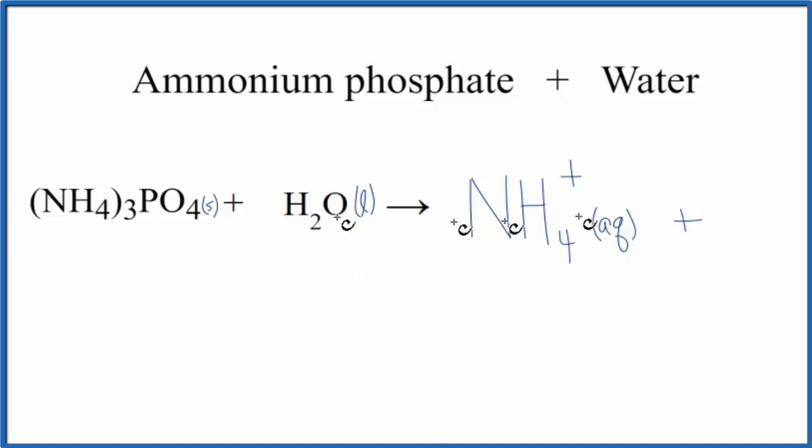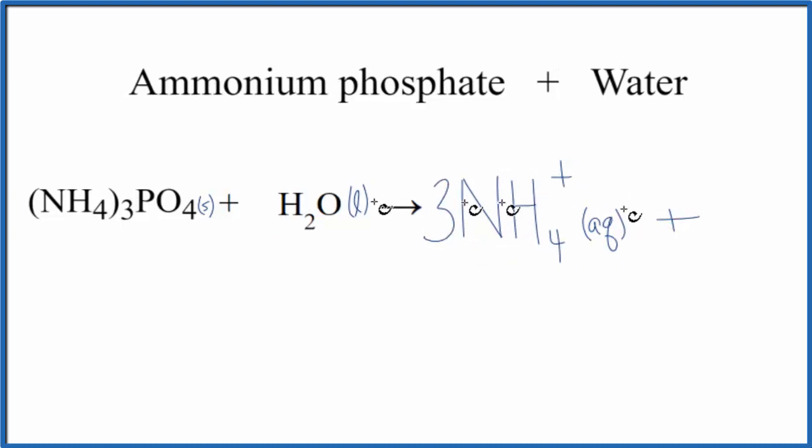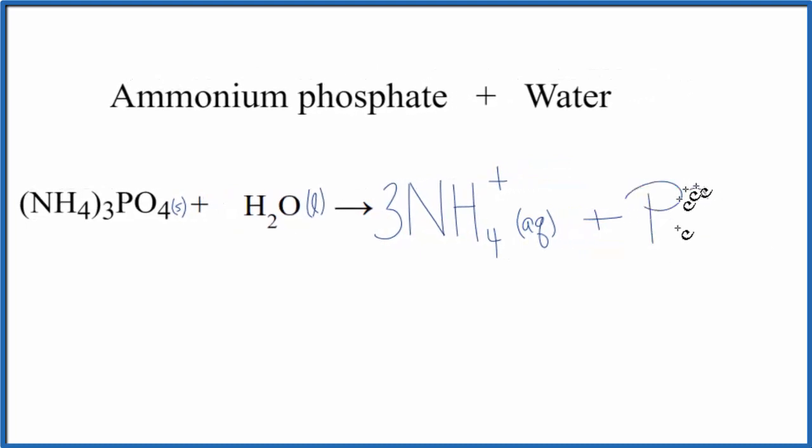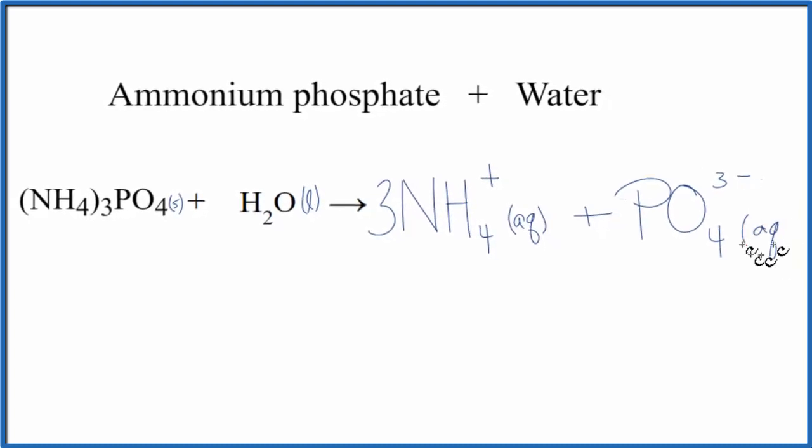We also have our phosphate. But before we do that, we have to remember the subscript here. This three means we have three ammonium ions. So we really need to put a three in front of our ammonium ion here. So we'll add that to our phosphate. We only have one of those, PO4, that was three minus. Another good one to memorize. And that's aqueous as well.